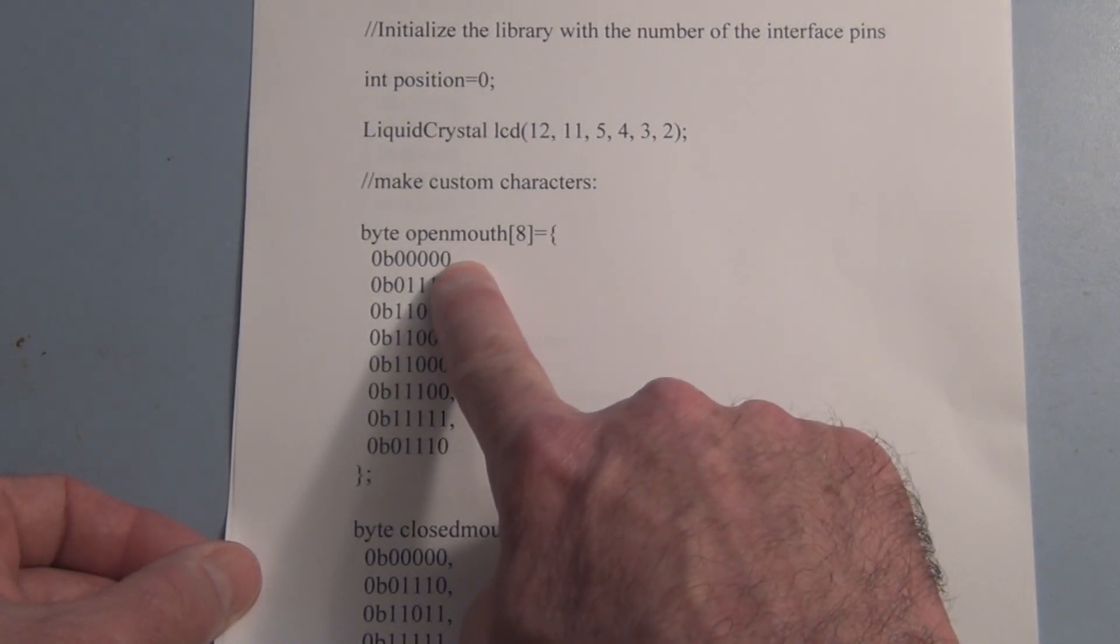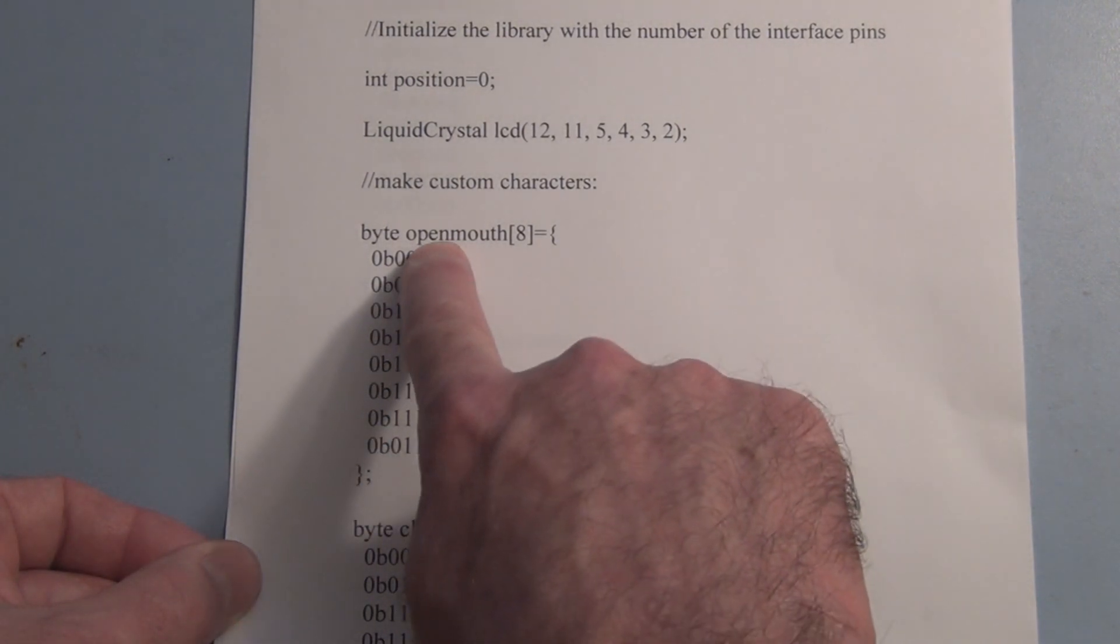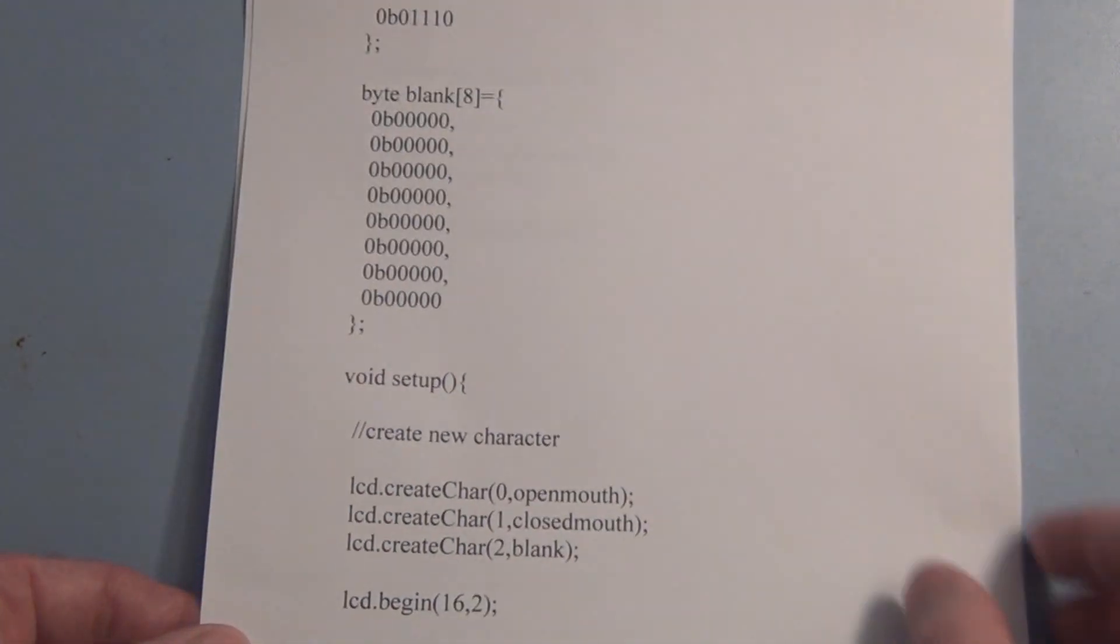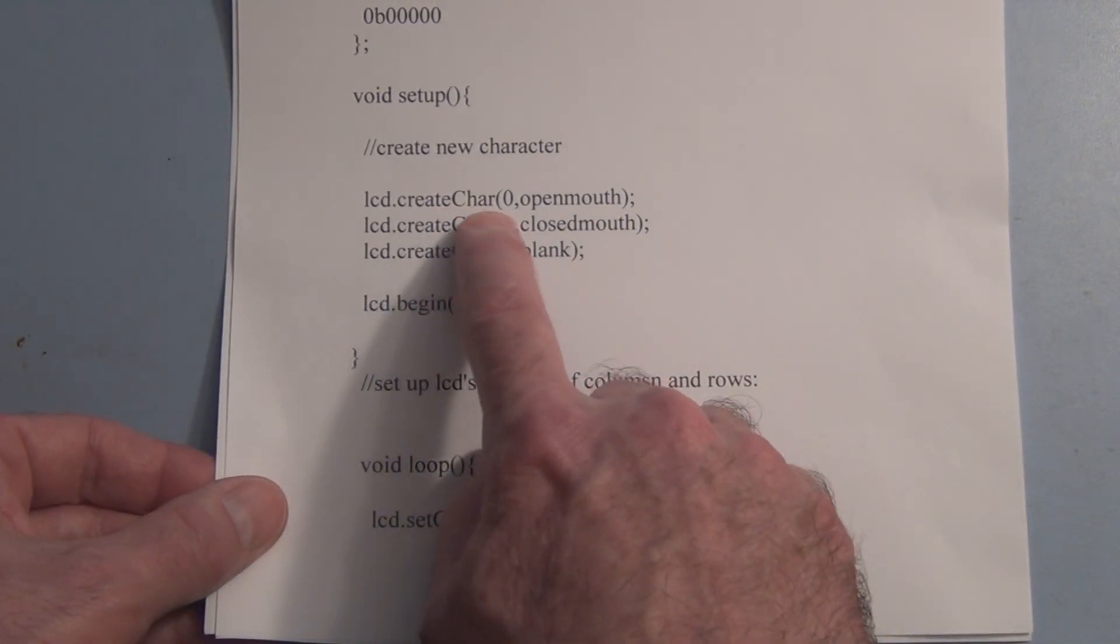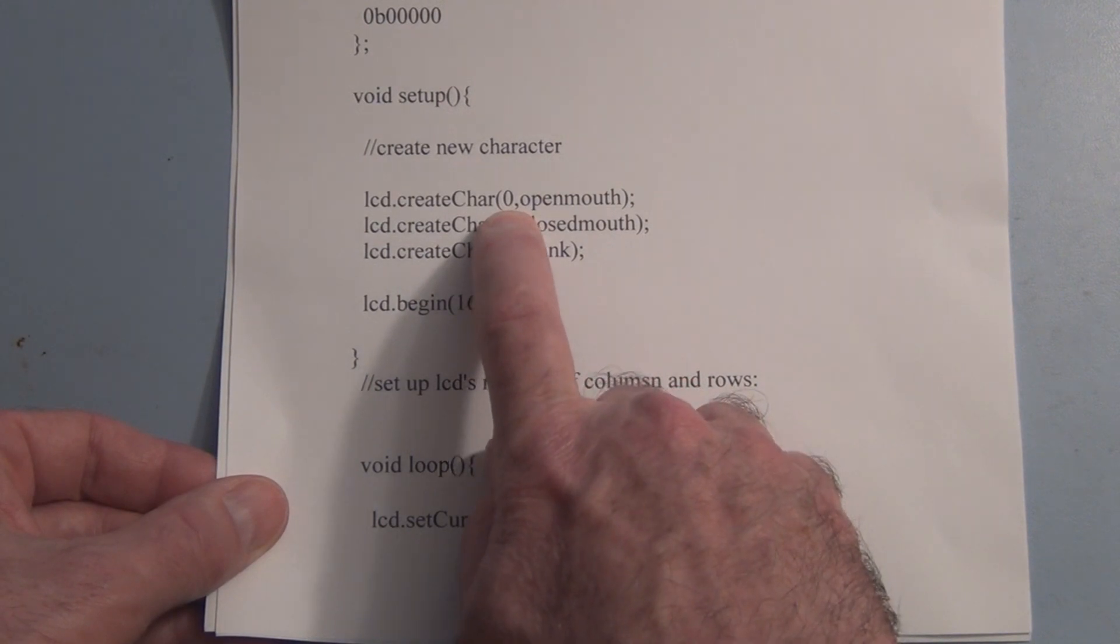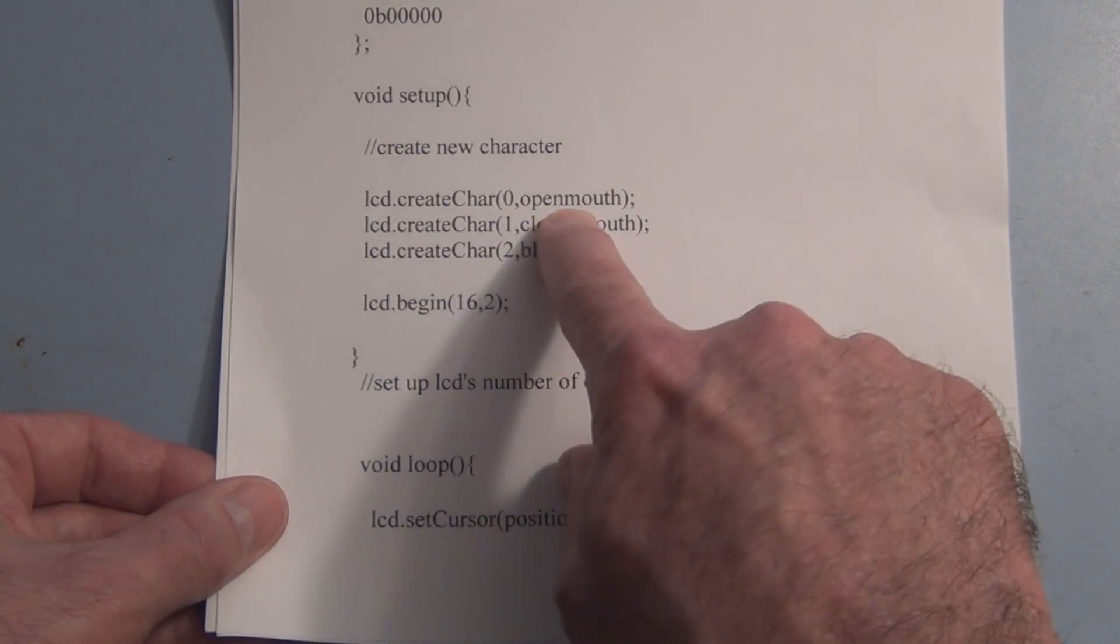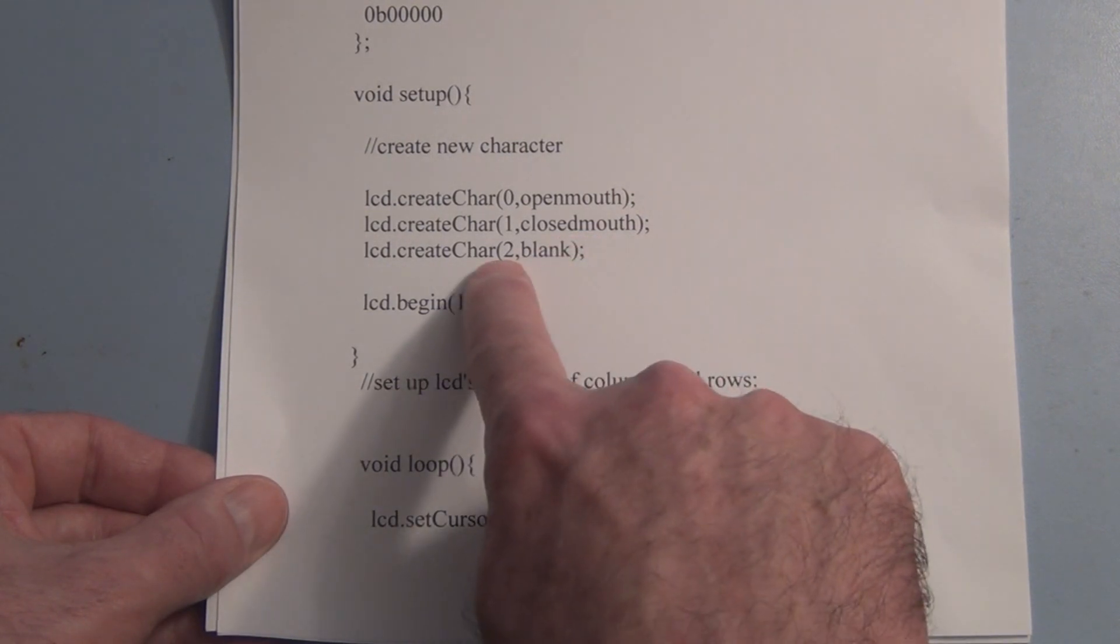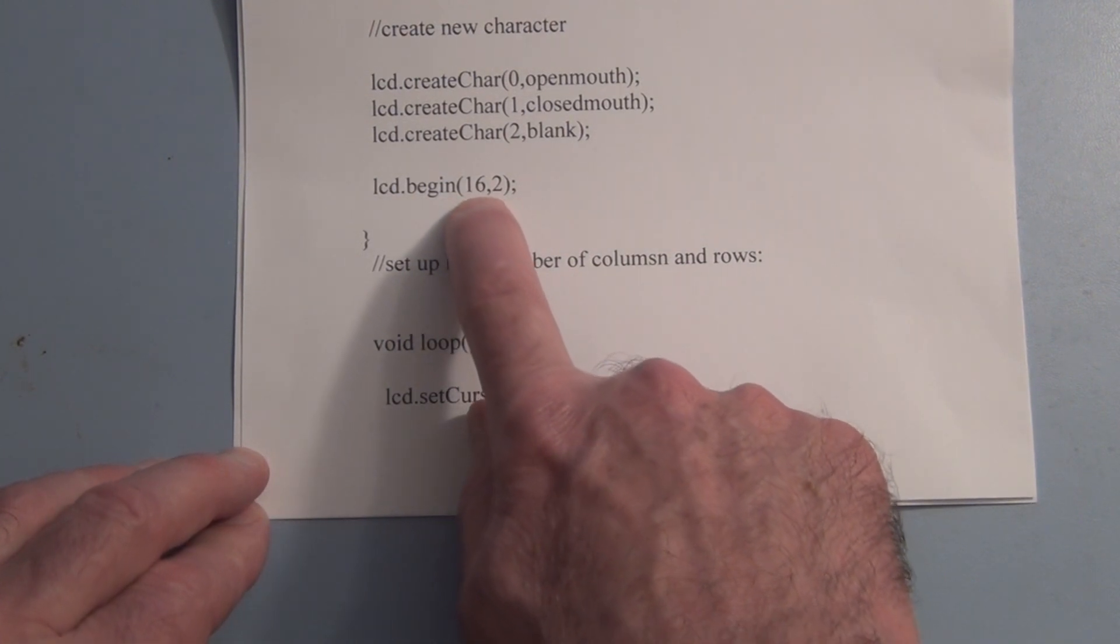After you set up these arrays that define which pixels you're turning on and off, you're defining them or calling them. This one's open mouth, I've got closed mouth and then another one I called blank. Then in the void setup you use the LCD create character. You have up to eight numbered zero through seven. LCD dot create character zero is the open mouth, character one is the closed mouth, and then two is blank. Then using LCD dot begin we define the LCD display as 16 by 2.